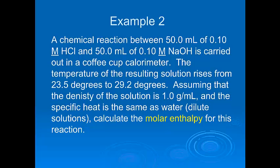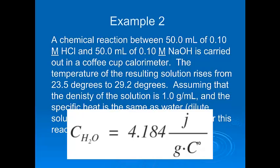Here's another example — a chemical reaction happening inside our calorimeter. We have 50 milliliters of 0.10 molar hydrochloric acid and 50 milliliters of 0.10 molar sodium hydroxide. That's an acid and a base — a neutralization reaction. When you do this reaction, it actually produces heat, and we want to figure out how much. We put this in a coffee cup calorimeter, and the temperature of the resulting solution rises from 23.5 degrees to 29.2 degrees. We have to make some assumptions: the density of this solution is about 1 gram per milliliter, about the same as water, since these are fairly dilute solutions.